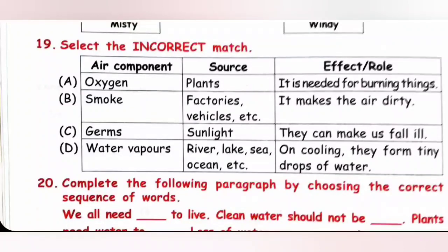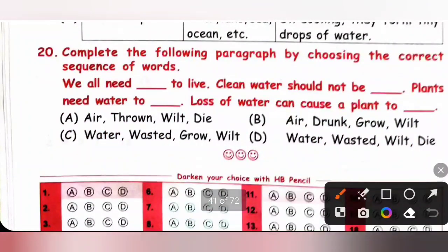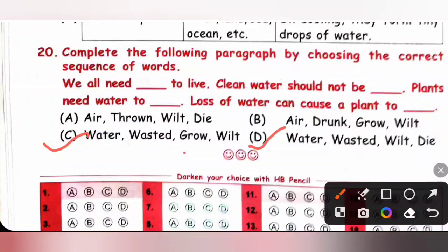Question 20: Complete the paragraph with the correct sequence of words. We all need air and water to live. Clean water should not be wasted. Plants need water to grow. Loss of water can cause a plant to wilt. Option C is the correct answer.